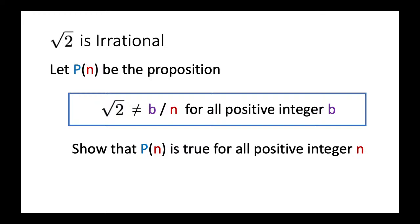The next example: we want to show that √2 is irrational. We have already proven this using proof by contradiction. Here we will use the induction format, though we still use contradiction inside the proof. Let P(n) be the proposition that √2 is not equal to b/n for all positive integers b.